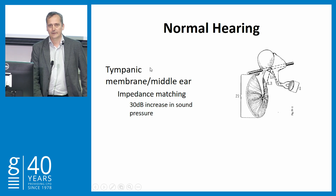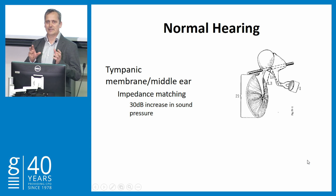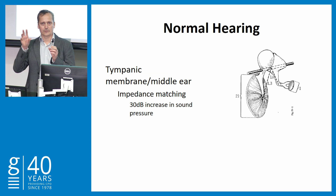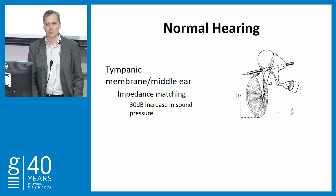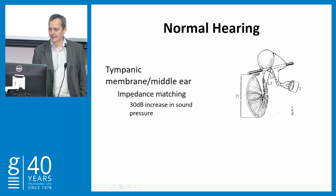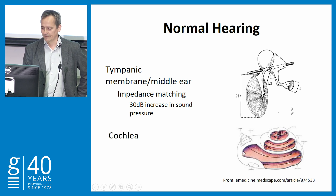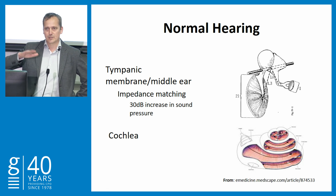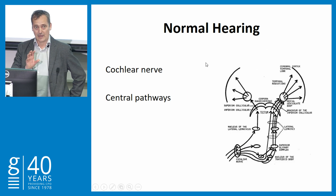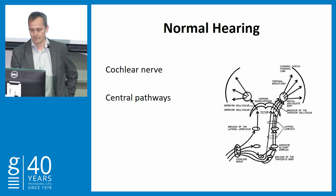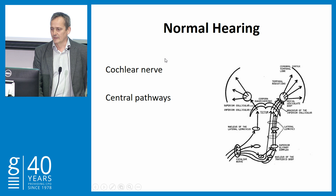Normal hearing involves the pinna and the ear canal, but the crucial thing is the tympanic membrane, where we amplify sound from the air conduction part of hearing to the fluid-containing compartments of the cochlea. The eardrum transmits from a large surface area to a smaller one, with the ossicular chain providing leverage. Sound is transmitted via the stapes to the fluids of the inner ear. Vibrations cause frequency-specific stimulation of the hair cells, then electrochemical transmission via the cochlear nerve up to the hearing cortex — a pathway that crosses over and involves both cortices.